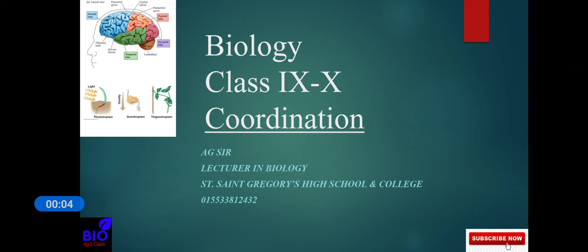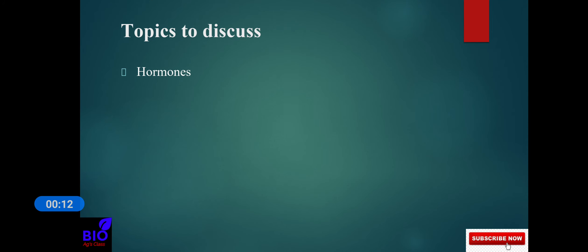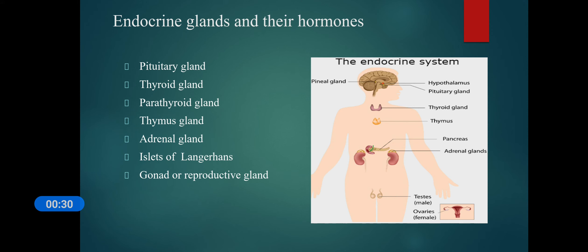Good morning students. Today we'll discuss human hormones, endocrine systems, and the functions of those hormones secreted from endocrine glands. So let's start. Our first question would be: what is the endocrine system? The endocrine system is a network of glands in our body that secrete hormones, and these hormones are responsible for almost every cell, organ, and function in our body.